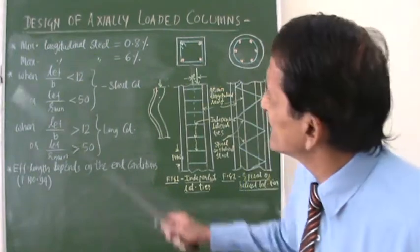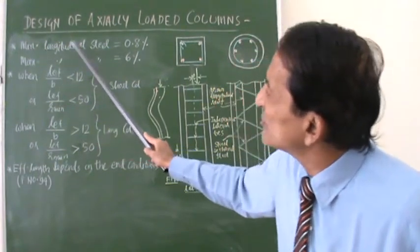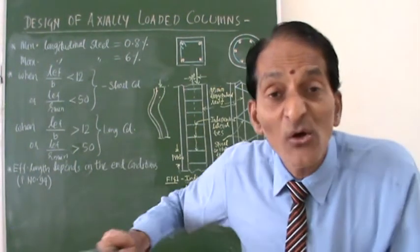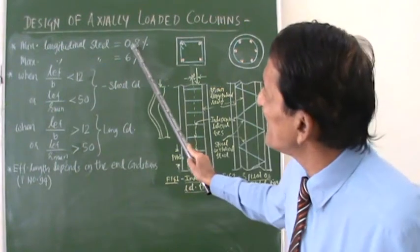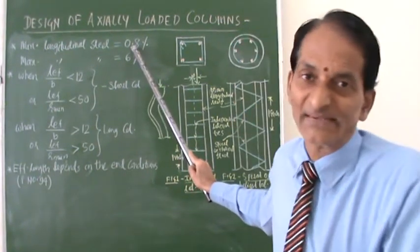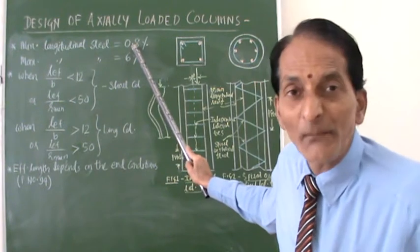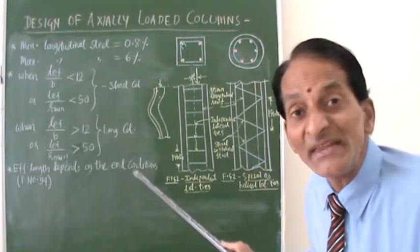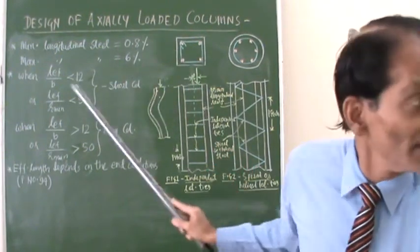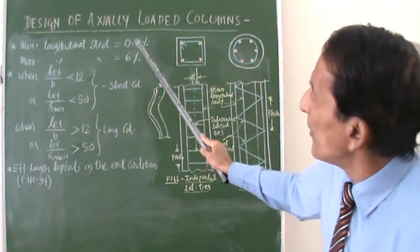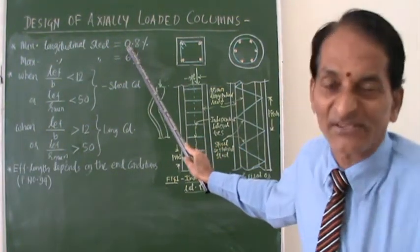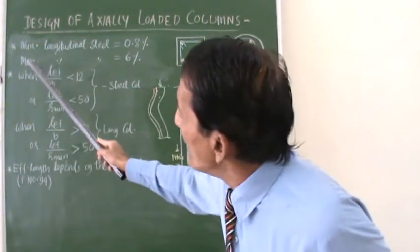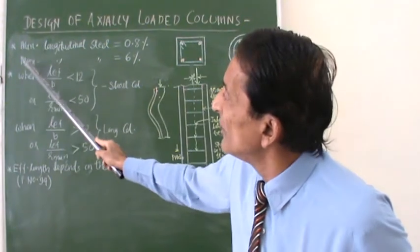Along with that, minimum longitudinal steel should be 0.8% of the gross cross-sectional area. This minimum steel will take care of the buckling effect or the tension effect in your column. That is the reason why 0.8% of the steel is a must in any column.